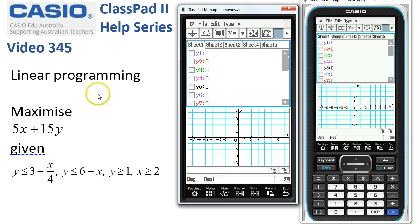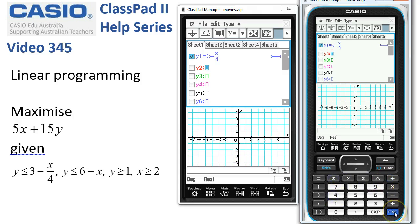Our first job is to set up the restrictions that we're given here. So let's start with the first one: y equals 3 minus x divided by 4, and tap execute.